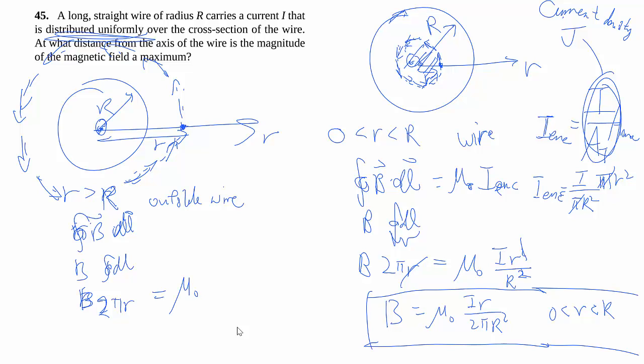This other side is a lot simpler this time, because the charge enclosed here, you're enclosing the entire wire, so you're taking the whole current. And this result, you should recognize as the one we've derived earlier in the chapter, using the slice and dice method.